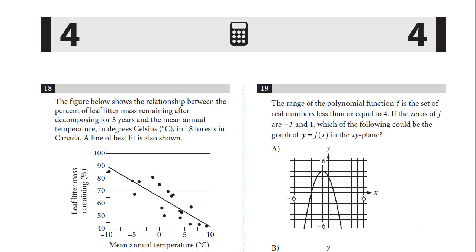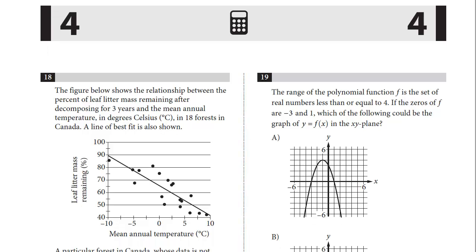Let's take a look at 18. The figure shows the relationship between the percent of leaf litter mass remaining after decomposing for three years and a mean annual temperature in degrees Celsius. In 18 forests in Canada, the line of best fit is shown.